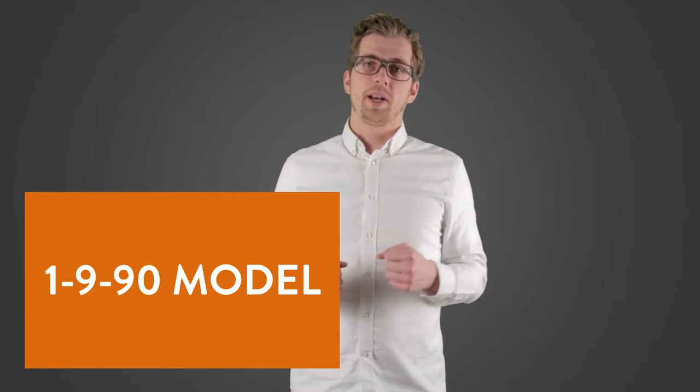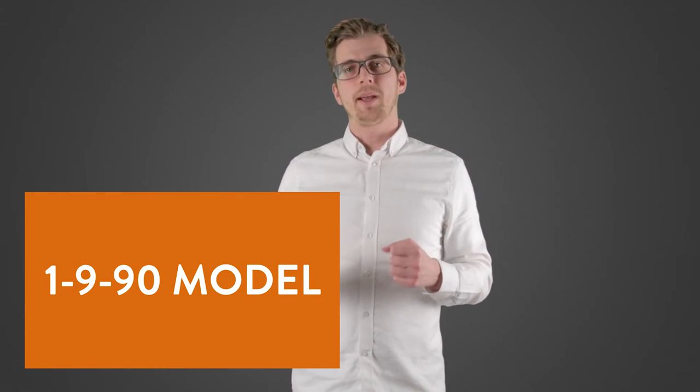The problem with the 1-9-90 model is that it's usually depicted as a pyramid, meaning it's linear. Someone decides something or creates something that people will react to, that then people will consume.